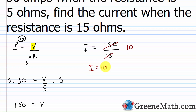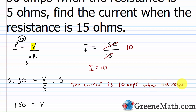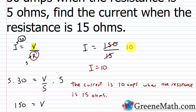Because it's a word problem, let's write a sentence: the current is 10 amps when the resistance is 15 ohms. Notice — it's inverse variation: as r increased from 5 to 15, the current I decreased from 30 to 10. That's consistent with what we know about inverse variation.